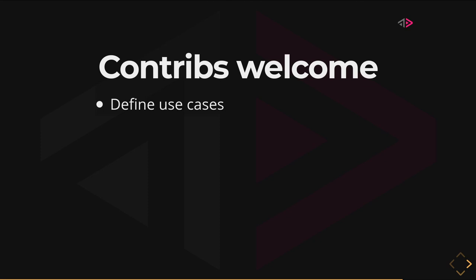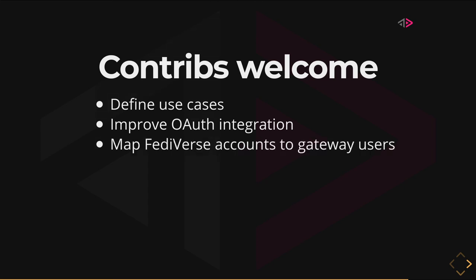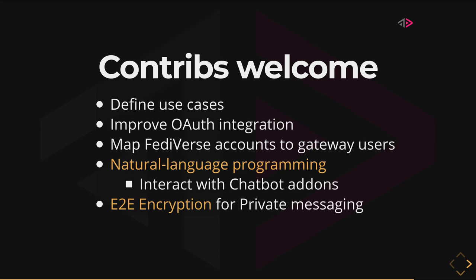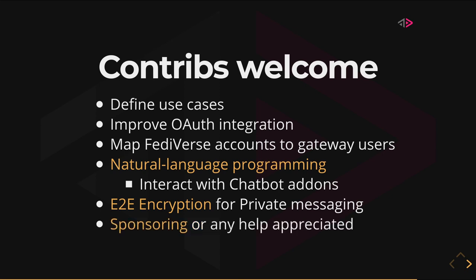More contributions are welcome. We can define more usable use cases — like plants and so on. We can improve CORS integration to address also other ActivityPub services like events and Mobilizon, for instance. We can also try to map Fediverse accounts to gateway users — that can be interesting if you want to share information between family members. We can also do more processing with natural language, like interacting with a chatbot add-on. We can do end-to-end encryption if you want more privacy between different users through the Fediverse. Feel free to reach me if you have more ideas — that's really interesting.